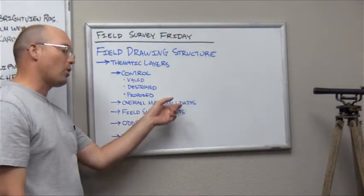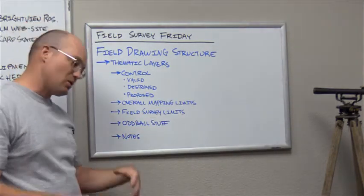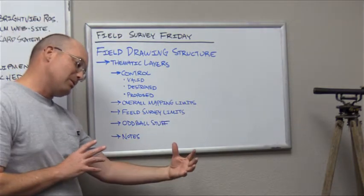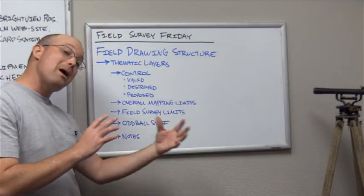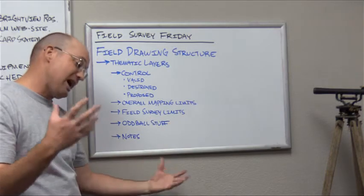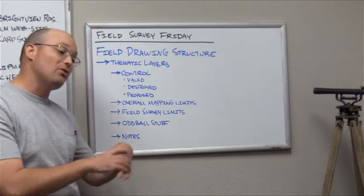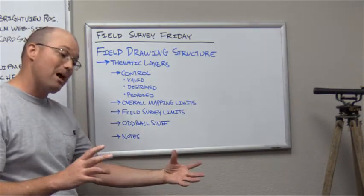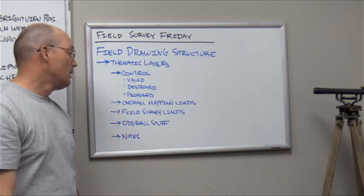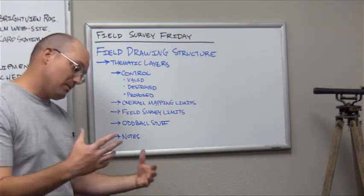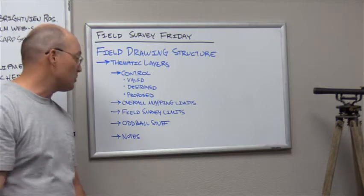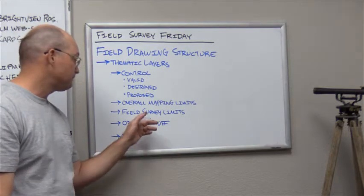I usually like to put in my overall mapping limits. You can have one mapping limit for each task, or maybe just your overall scope mapping limit. It's going to depend a little bit on the job.